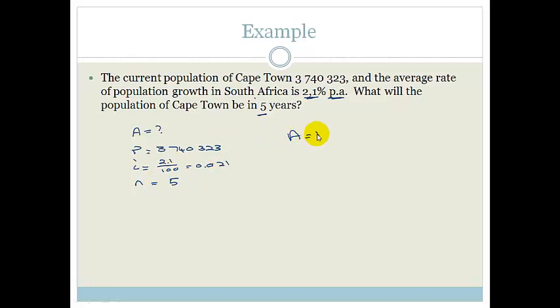So A is equal to P times 1 plus I to the N. So the principle is huge. It's 3,740,323 times by 1 plus 0.021. So I'm just writing it straight away as 1.021 all to the power of 5.